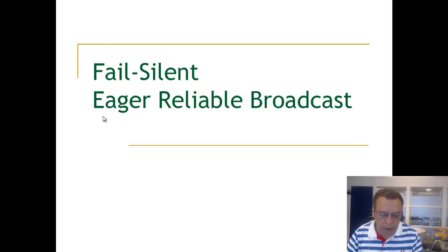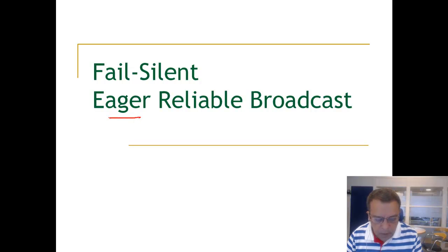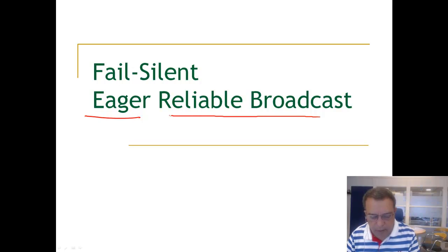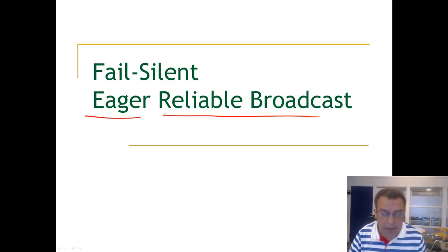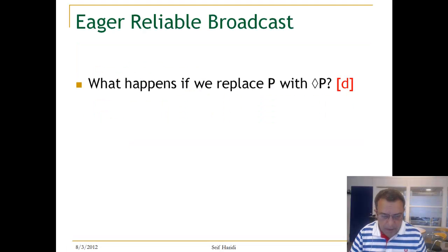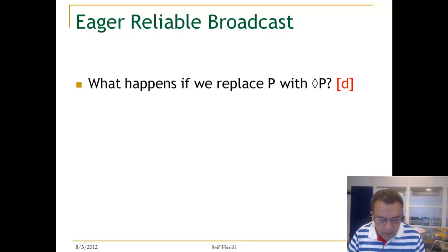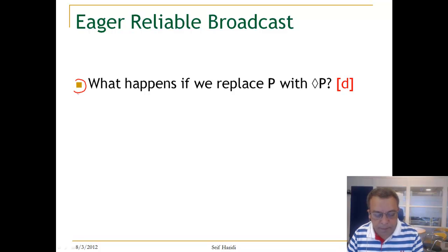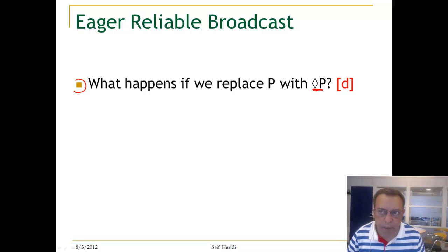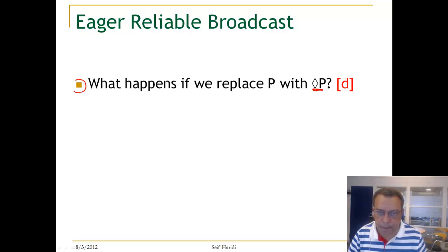We look now at an eager version of the Reliable Broadcast algorithm. It turns out that this version will work in the fail-silent model. If you remember the Lazy Reliable Broadcast, a question that one can raise is: what happens if we replace P with Diamond P? Diamond P has eventual accuracy — it means that it can suspect some processes to have failed and later revise this decision.